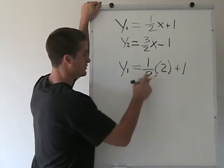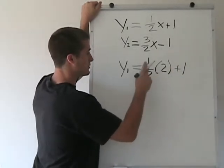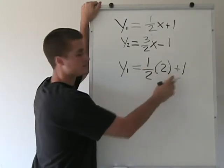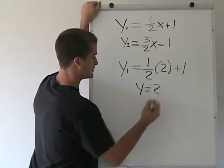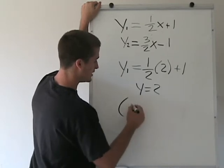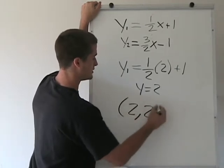And then if we solve, we have 1 half times 2 is 1 plus 1 is 2. So we have y equals 2. So our point of intersection is 2, 2.